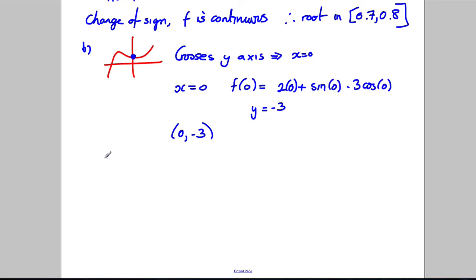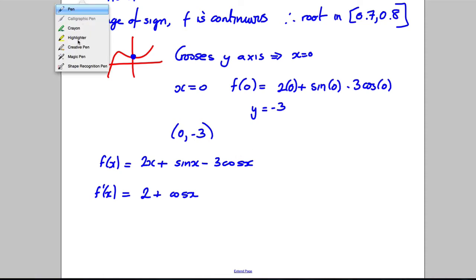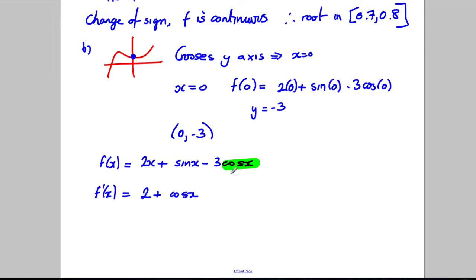Now we want the gradient, so we differentiate. f(x) = 2x + sin x - 3cos x, so f'(x): the derivative of 2x is 2, the derivative of sin x is cos x, and the derivative of -3cos x is positive 3sin x. So f'(x) = 2 + cos x + 3sin x.